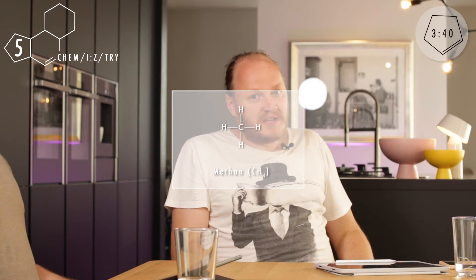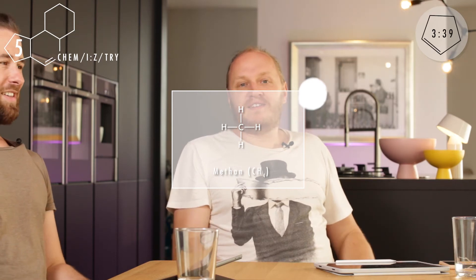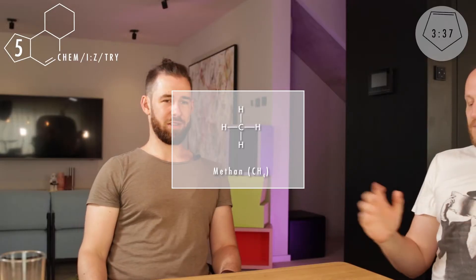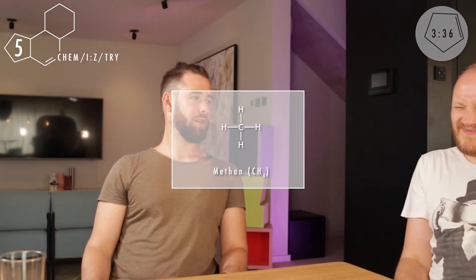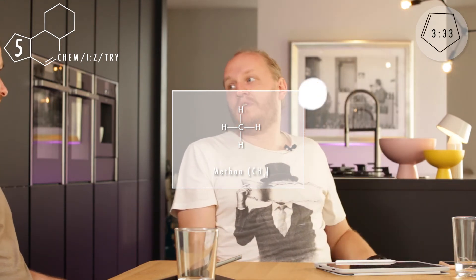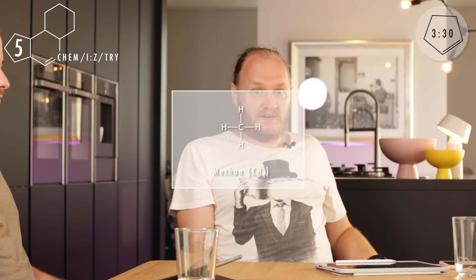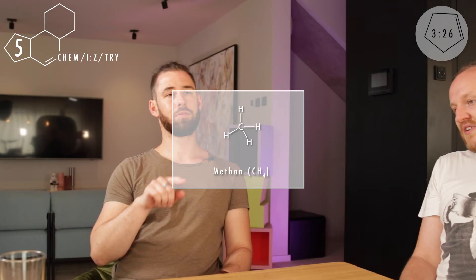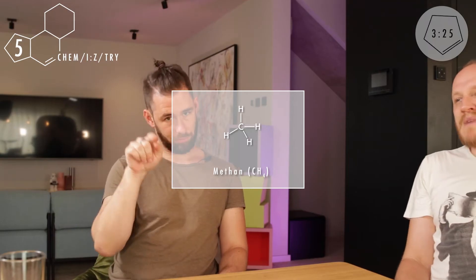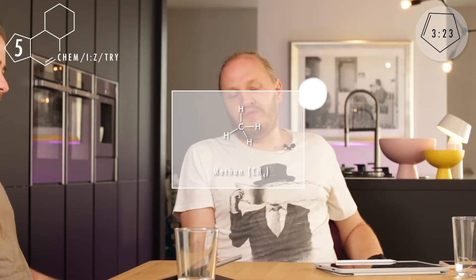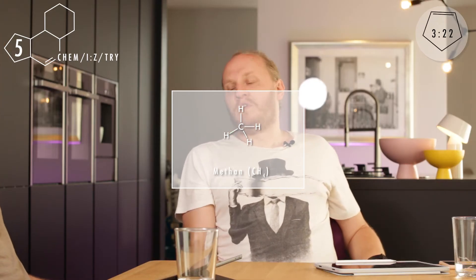Jetzt bin ich aber nicht im Zweidimensionalen – unsere Welt ist dreidimensional. Jetzt wird's tricky. Das heißt, wir haben noch zwei Raumachsen, die wir ausnutzen können, dann spannen wir einen Tetraeder auf. Beim Tetraeder könnt ihr euch vorstellen: Kohlenstoff in der Mitte und die Ecken sind dann jeweils der Wasserstoff. Das ist der maximal mögliche Abstand im Dreidimensionalen mit 109,5 Grad.